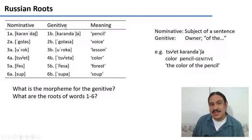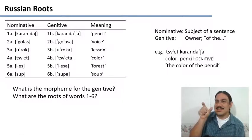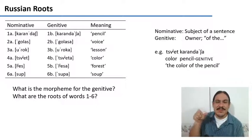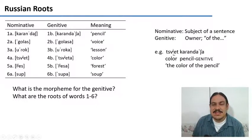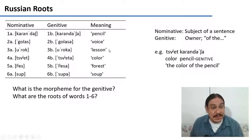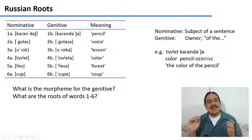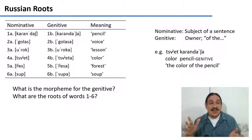The genitive form is the equivalent of apostrophe-s in English — something 'of the pencil,' 'of the voice.' For example, in 'tsvet karandasha,' this means 'the color of the pencil' — so 'of the pencil,' 'of the forest,' 'of the soup.' The data seems very clear; there seems to be just one tiny difference between the nominative and the genitive forms. What is the morpheme for the genitive in Russian, and what are the roots for words one through six? Please pause the video.